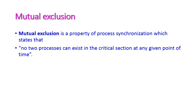Let us understand what mutual exclusion is. It is an important property of process synchronization — no two processes can exist in the critical section at any given point of time. Only one process can access the critical section; all other processes have to wait until the first process completes its execution. This is called mutual exclusion.